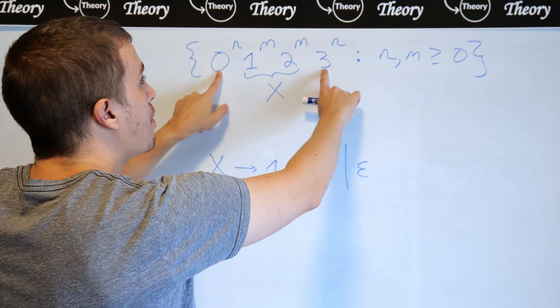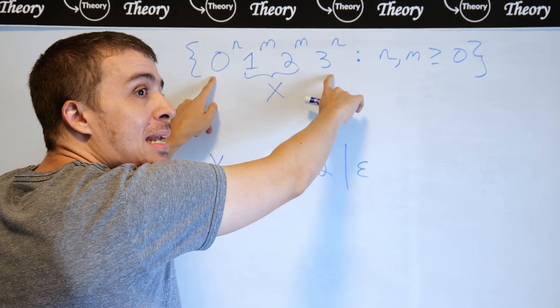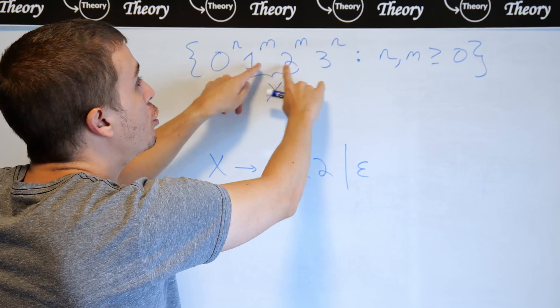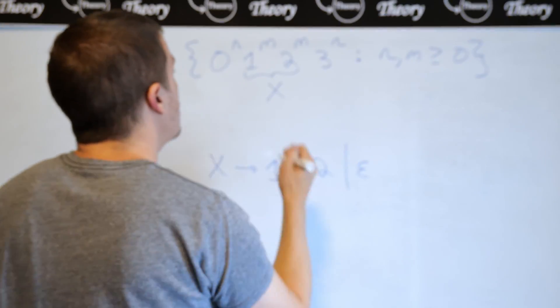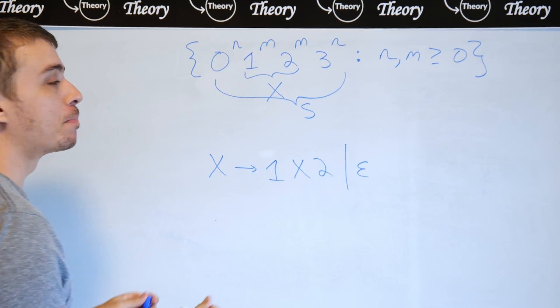So whenever the grammar decides, okay, I want to start working on the ones and twos, we need to stop making the zeros and threes because there are no zeros and threes in the middle. So I'm going to have a variable called s be making this part, the whole thing.